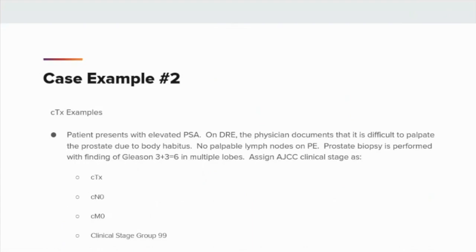Case example 2: Patient presents with elevated PSA. On DRE, the physician documents that it is difficult to palpate the prostate due to body habitus. No palpable lymph nodes are noted on physical exam, and a prostate biopsy is performed with findings of Gleason's 3+3=6 in multiple lobes. AJCC clinical stage would be assigned as clinical TX, clinical N0, clinical M0, with a clinical stage group of 99. Because we have a Gleason's score of 6 and the DRE was unable to be performed, a clinical stage group must be assigned as 99.